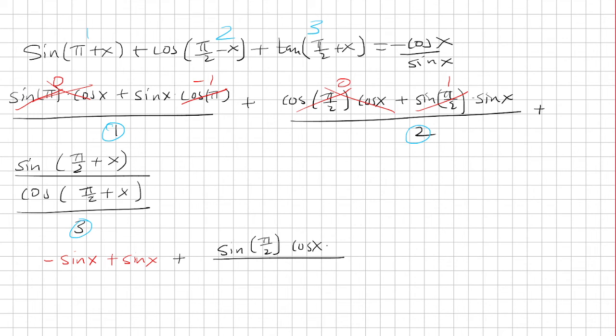Put sine pi over 2 times cosine of x plus sine of x times cosine pi over 2. And then that's all over cosine pi over 2 cosine x minus sine pi over 2 sine x.